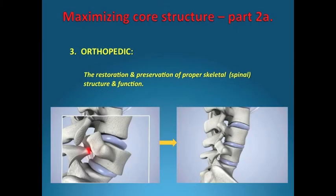The third term is orthopedic: the restoration and preservation of proper skeletal spinal structure and function. In this slide you can see an example of what is known as spondylolisthesis, or in the sports medicine field, 'spondy.' The key to this injury is resetting or moving the anterior translation of the pars fracture back to its correct alignment. Moving the vertebrae back to its original location constitutes an orthopedic effect.